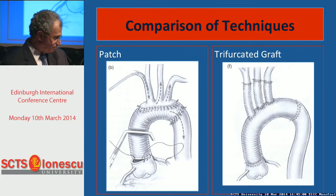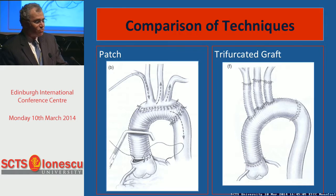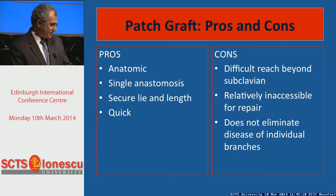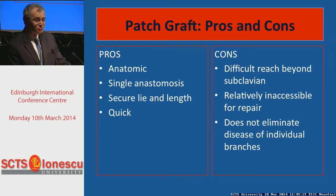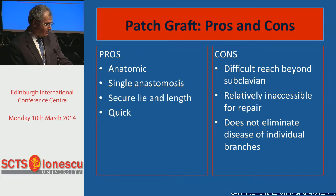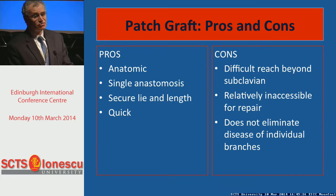The patch and the trifurcated grafts both work well — I use them both. The patch graft is anatomic, it's one anastomosis, the length and lie are secure, and it's quick. On the downside, it's hard to reach beyond the subclavian, it's relatively inaccessible for repair afterwards, and if there is arteriosclerotic disease of the branch vessels, you haven't addressed that.